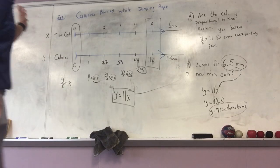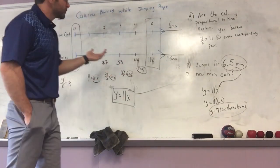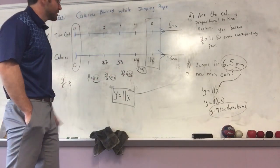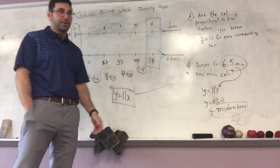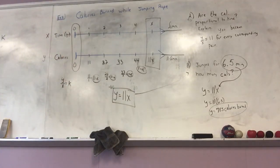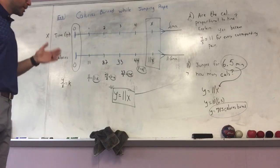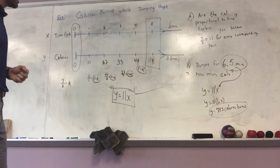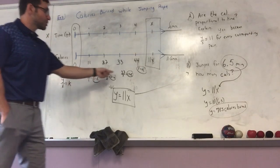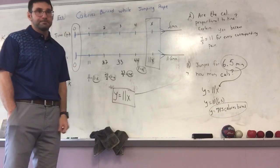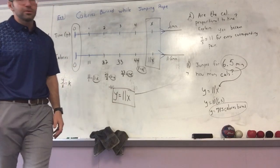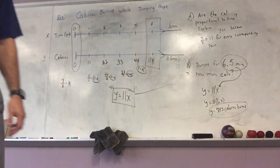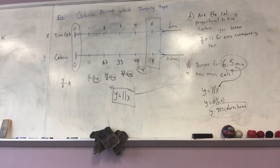Last but not least, we can write an equation for proportional relationships: y = kx. You have to find your K in order to write the equation. Now go to example three, which talks about the summer job. Complete that on your own, raise your hand when you're done, and I'll come check it before giving you the remaining homework. Good job, everyone.